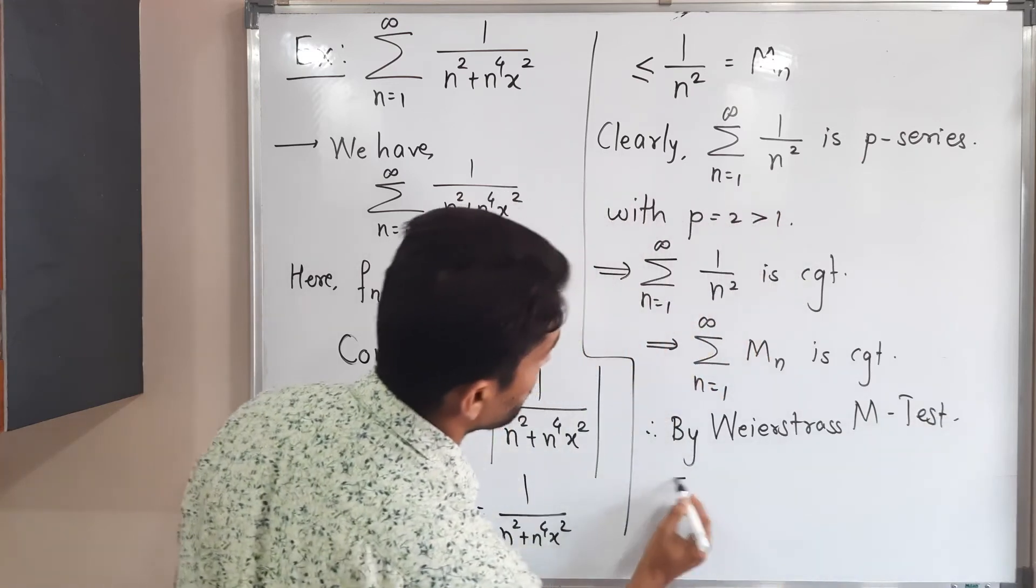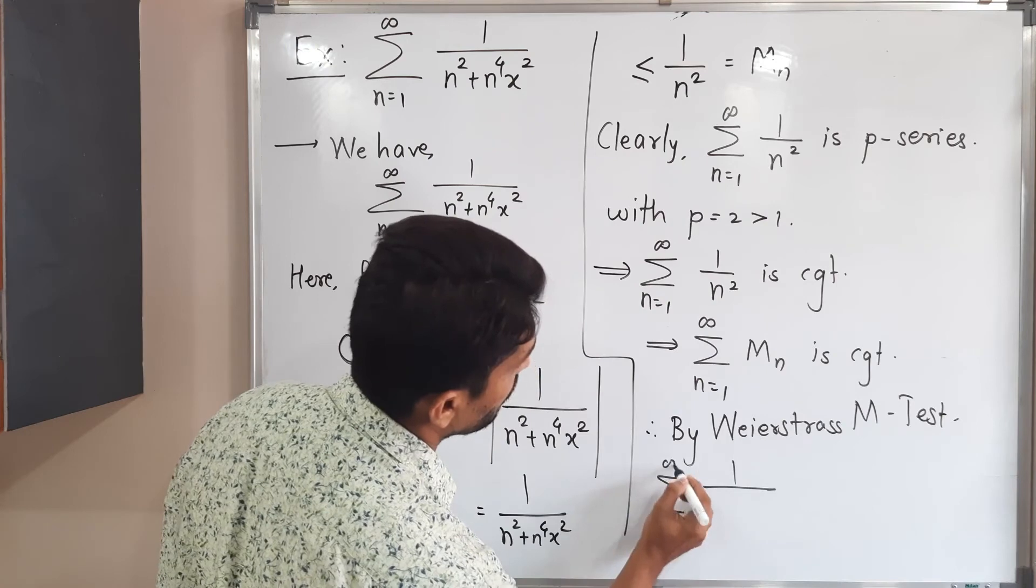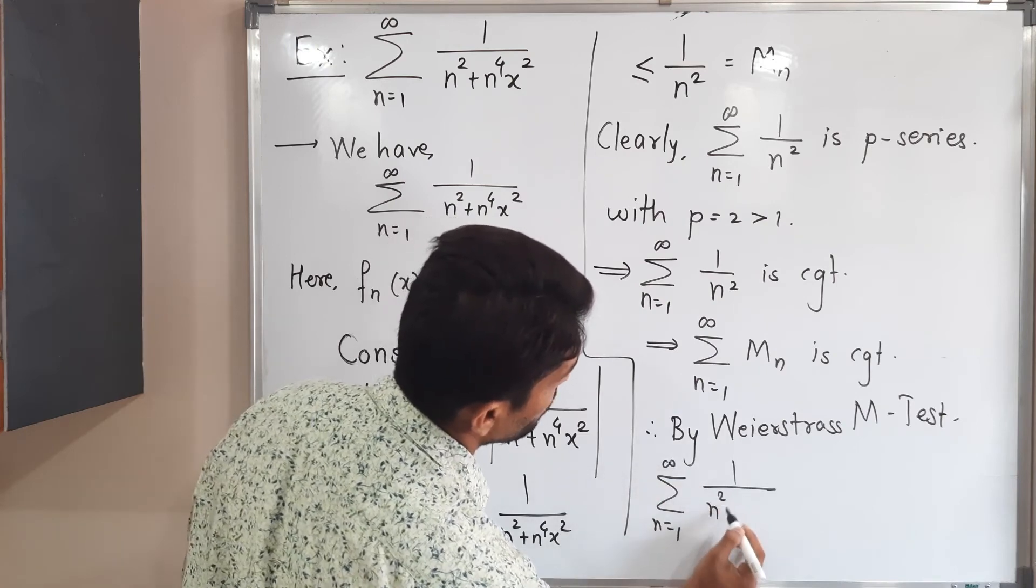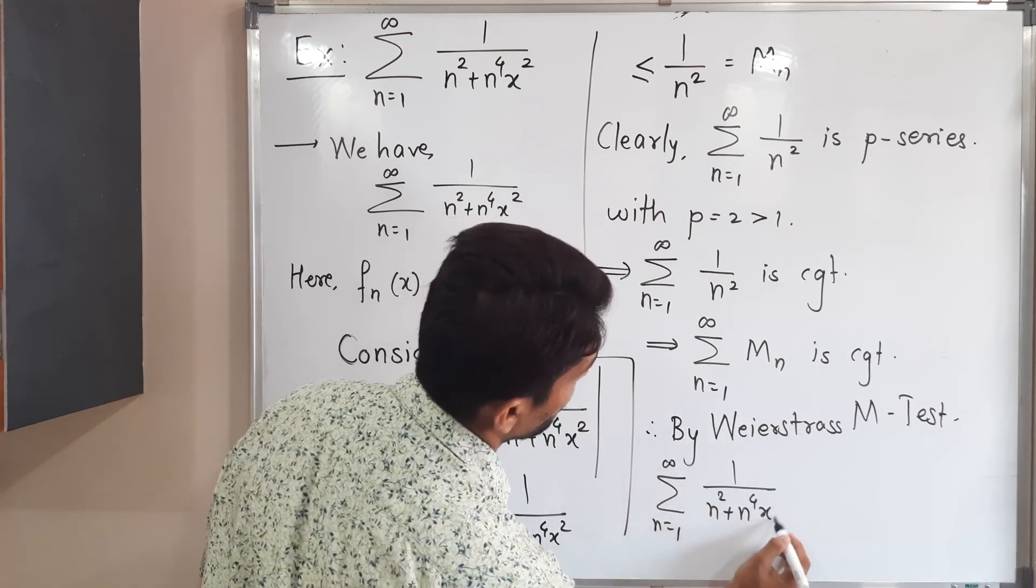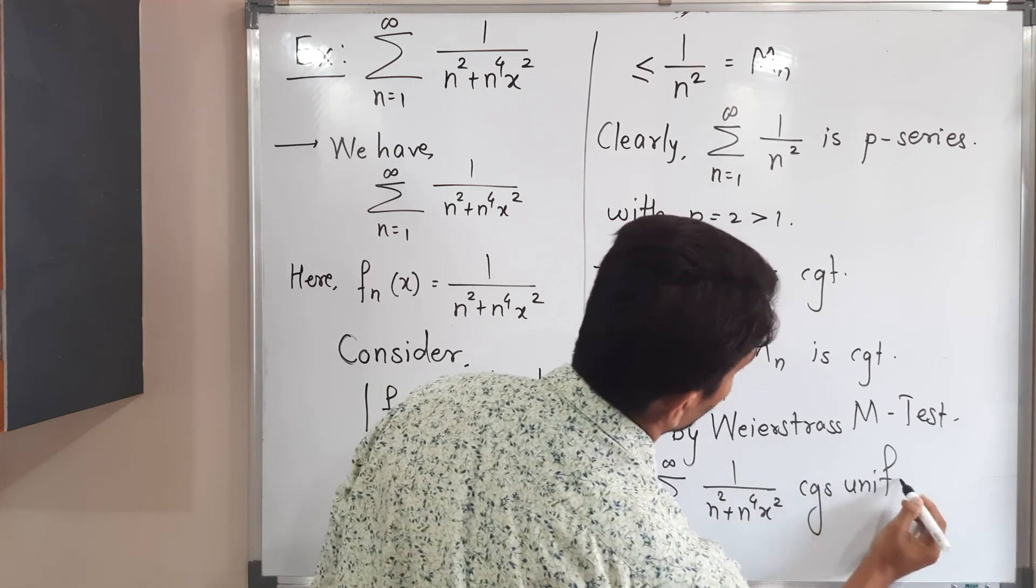What we get: given series of function, that means summation n running from 1 to infinity 1 upon n square plus n raised to 4 x square converges uniformly.